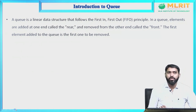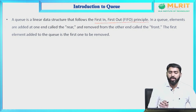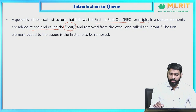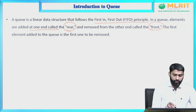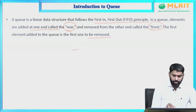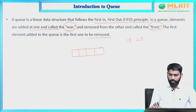What is queue? Queue is a linear data structure that follows the first in first out principle. In a queue, elements are added at one end called rear and removed from the other end called front. The first element added to the queue is the first element to be removed. For example, let us assume this is the queue and I want to insert elements 15, 25, 18, 9.